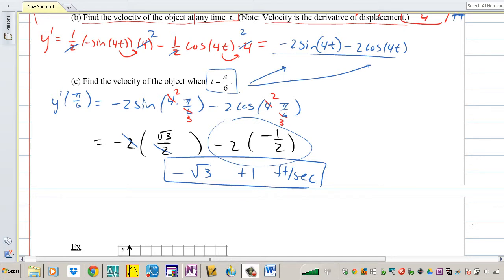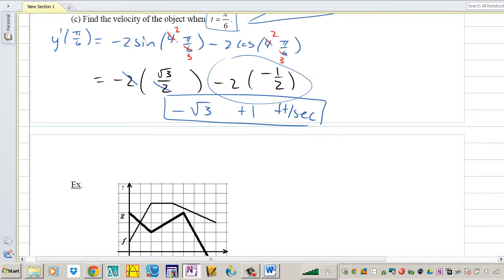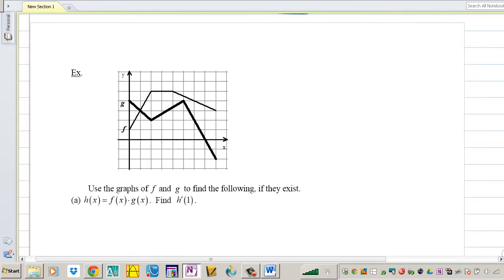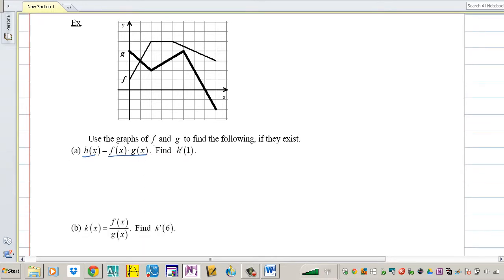Hey guys, we're going to continue chain rule day 3. Here we have an example that says use the graphs of F and G to find the following if they exist. H is defined as F times G, so they want us to find H prime of 1.